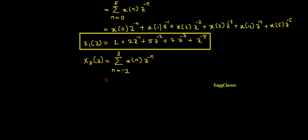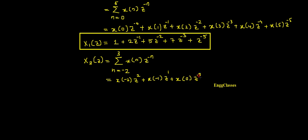X2(z) equals the summation from n equals minus 2 to plus 3 of x(n) z to the power minus n. Expanding this: x(−2) z to the power plus 2, plus x(−1) z to the power plus 1, plus x(0) z to the power 0, plus x(1) z to the power minus 1, plus x(2) z to the power minus 2, plus x(3) z to the power minus 3.